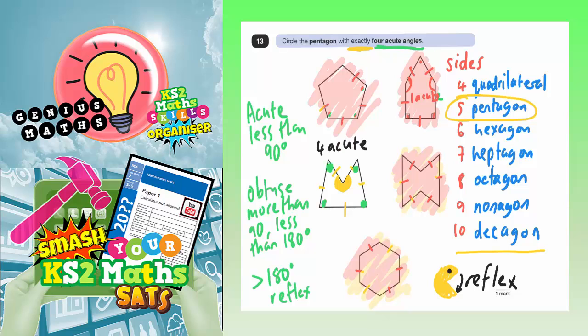So that is the shape that we need to circle. So our final answer, where it says circle the pentagon with exactly four acute angles, it is this one that we need to be circling. There we go, that's the correct shape.